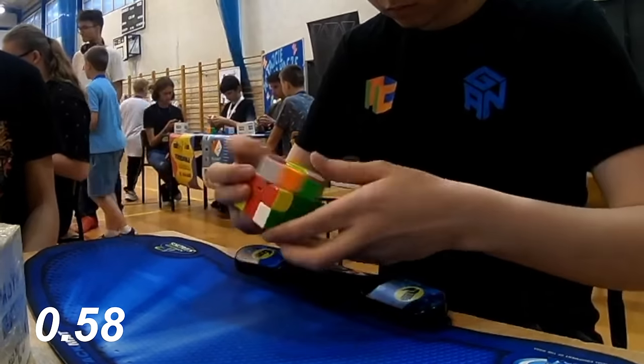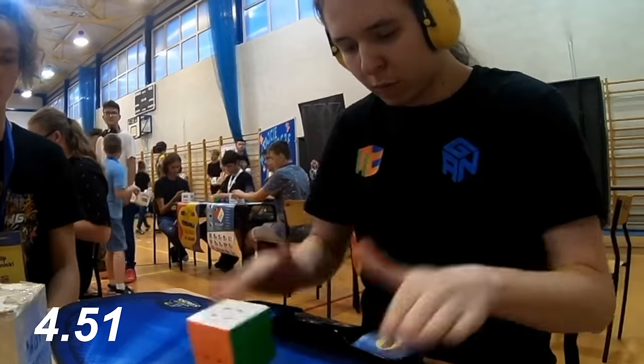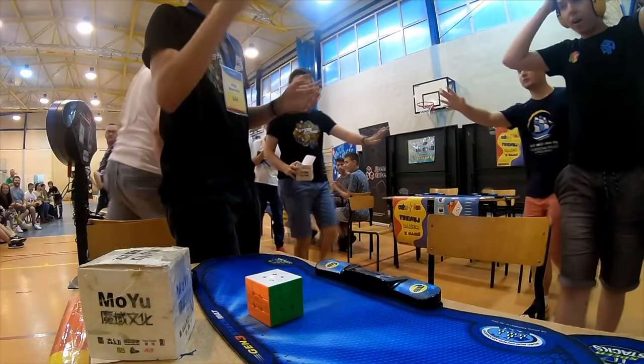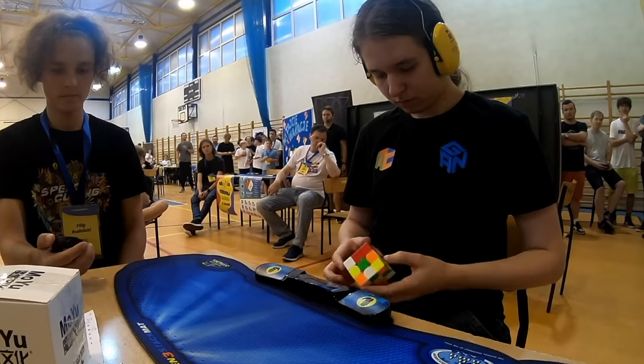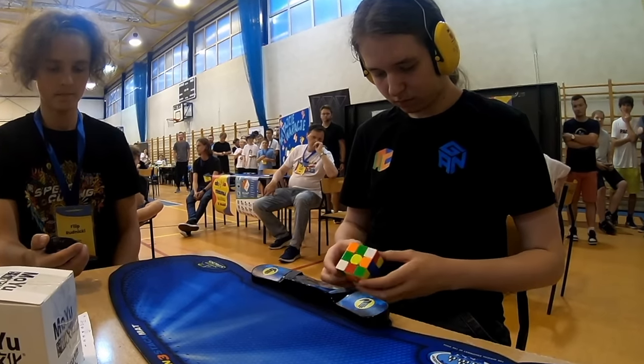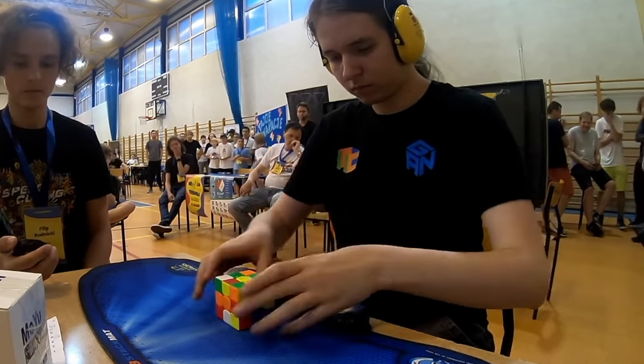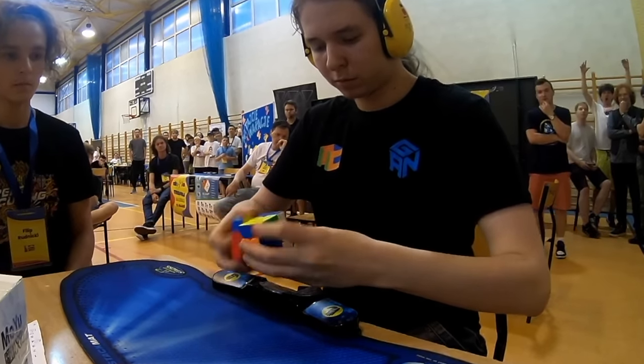It was later discovered that this fourth solve was a misscramble, and due to WCA policy on filmed world records, he was required to do an extra solve on an extra scramble to replace this misscrambled time. The world record average he thought he had was taken away, and now for the second time, he needs to clutch a sub-5 on demand to get the first ever sub-5 average.